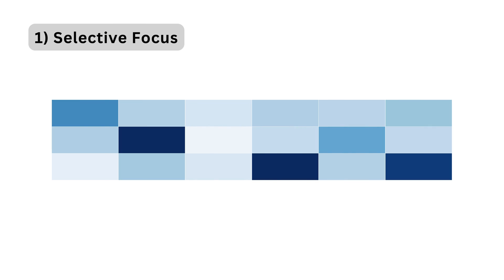Now let's explore why attention mechanisms have become a popular mechanism in the world of deep learning. First, selective focus: attention mechanisms allow models to focus on specific parts of input sequences, giving them the capability to prioritize relevant information. This selective attention improves the model's ability to capture essential features.